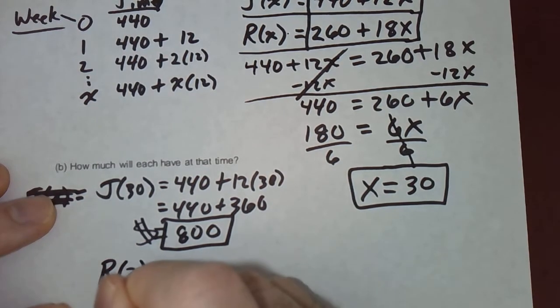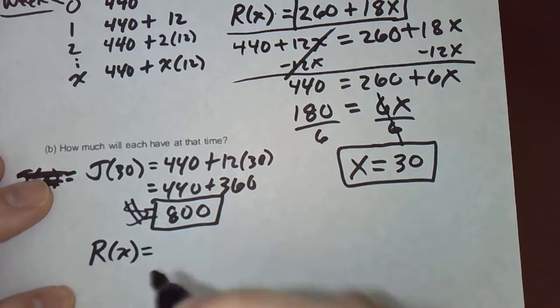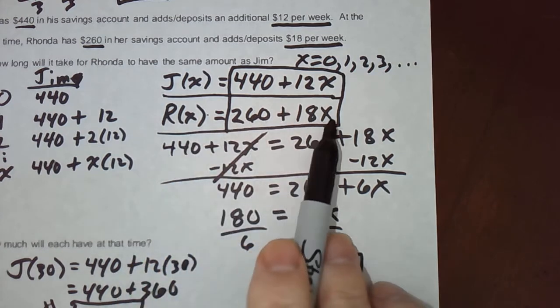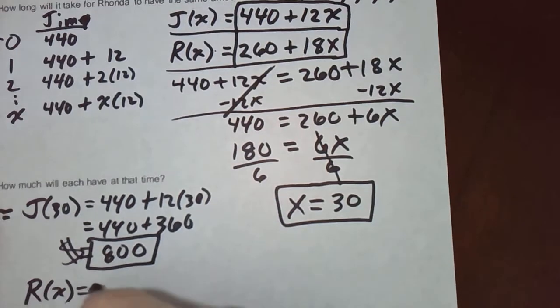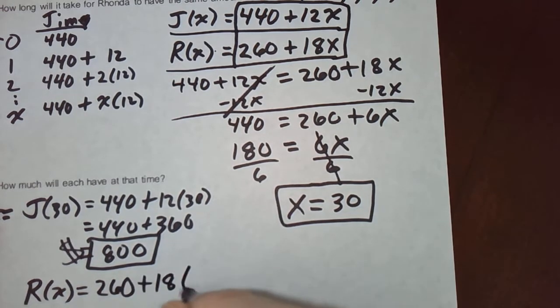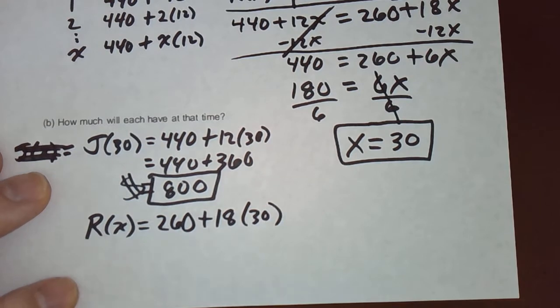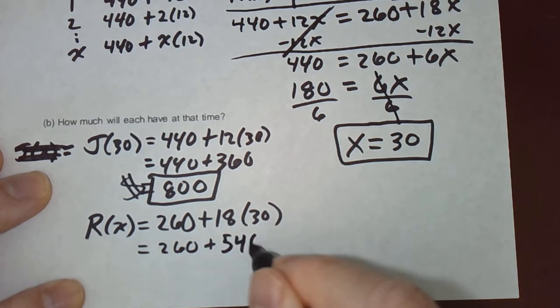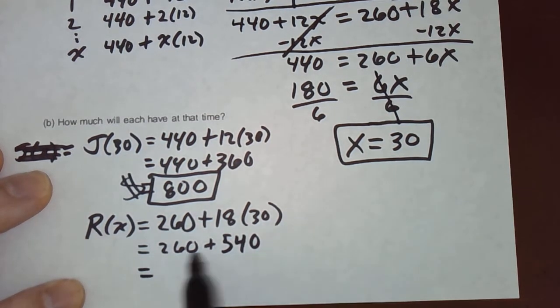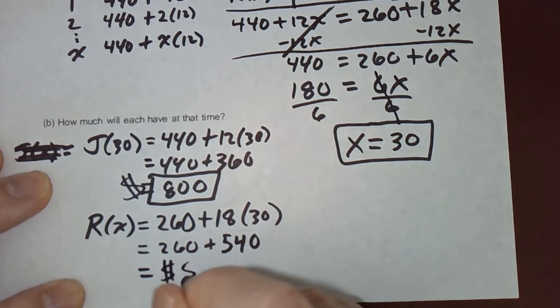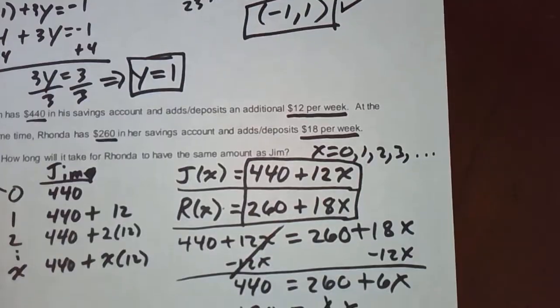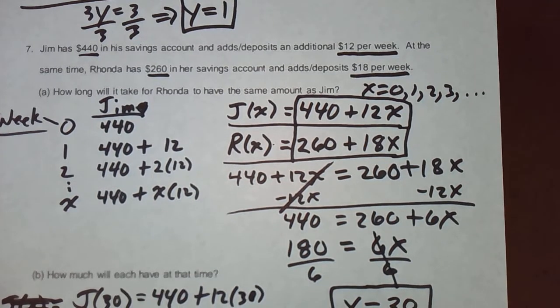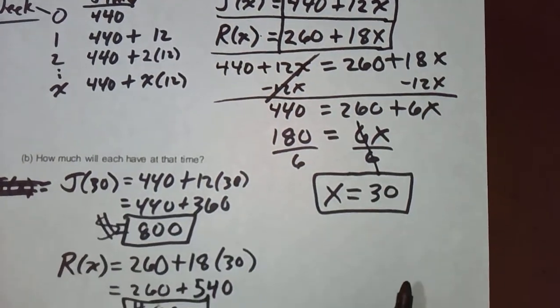And similarly, let's just, that's the answer. But we're going to verify that we made no arithmetic mistakes. And make sure we get 800 dollars when we plug in X equals 30 for Rhonda. The amount of money she has at week 30 would be 260 plus 18 times 30. 260 plus 18 times 30. That is 260 plus 18 times 3 is 54. So that would be 540. If you add up those numbers, you get 700, you get 800 again.